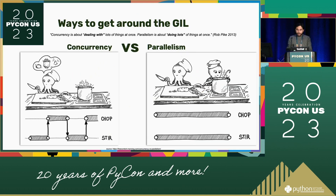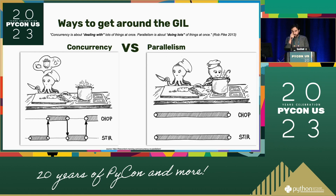Concurrency is about multiple tasks which can start, run, and complete in overlapping time periods in no specific order. Imagine a kitchen with one chef who is chopping salad while occasionally stirring the soup on the stove. He has to stop chopping, check the stovetop, and then start chopping again, continuing this process until everything is done. We only have one processing resource here — the chef — and his concurrency is mostly related to logistics. Without concurrency, the chef would have to wait until the soup is done on the stove before starting to chop the salad.